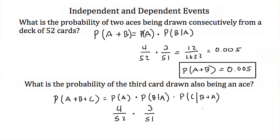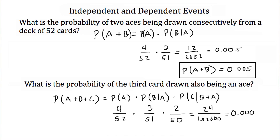Now we need the probability of C given that B and A have happened. If we've already drawn 2 of the 4 aces, there are only 2 aces left in the deck, and we've already taken 2 cards out, so there are only 50 cards left. So the probability of C given B and A is 2 out of 50. Doing this multiplication: 4 times 3 is 12, times 2 is 24. 52 times 51 times 50 is 132,600. That comes out to be 0.00018. So the probability of pulling 3 aces consecutively out of a deck of 52 cards is 0.00018.